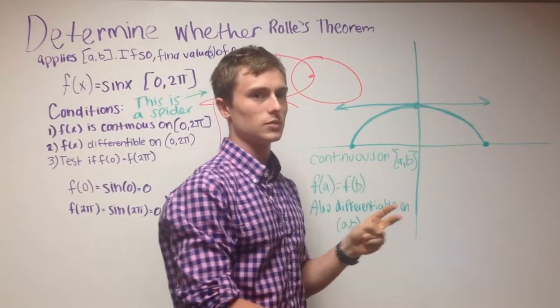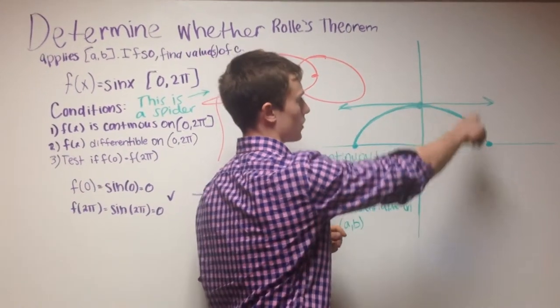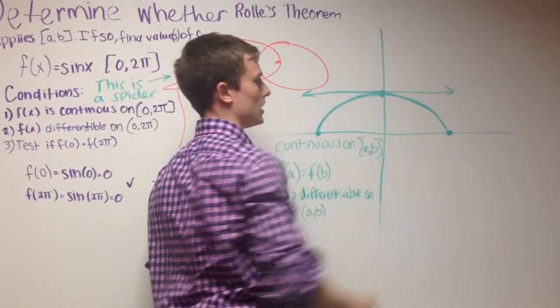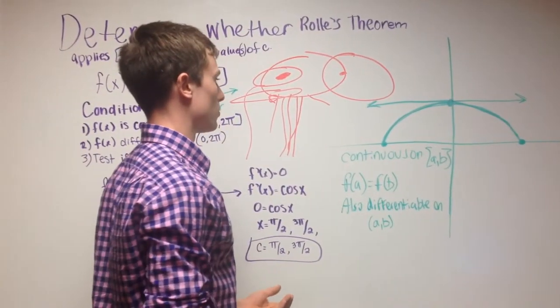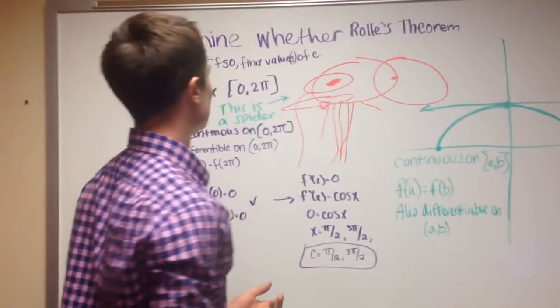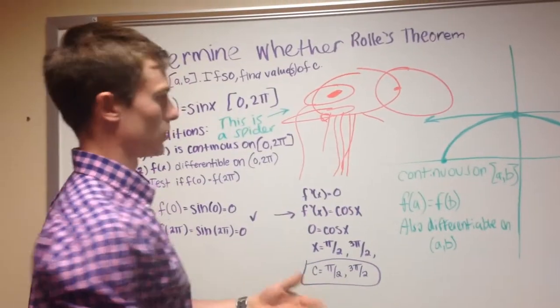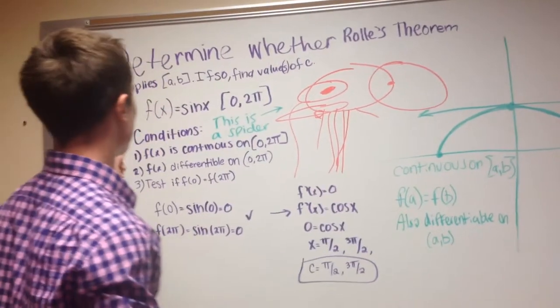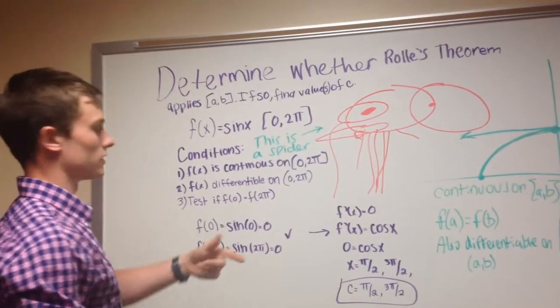Which means that there are only two possibilities. Either one, there's a curve of some sort, which leads back to this point, or there's a line. Either way, there is a point where you can find a value of c, and that will be the tangent line, the slope of the tangent line.